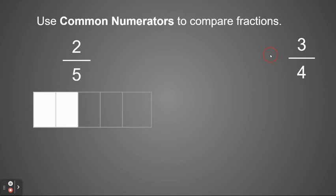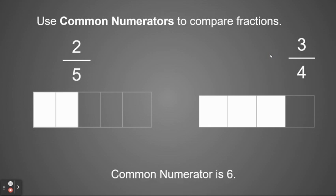So I'm going to have my picture of 2 fifths and my picture of 3 fourths. Again, looking at the pictures, you can kind of get an idea of which one's going to be bigger, but we want to make sure by having something in common. So we're going to find a common numerator of 6. So looking at 2 fifths,